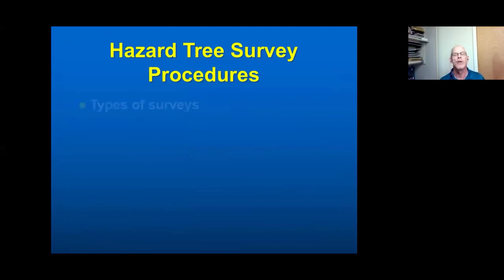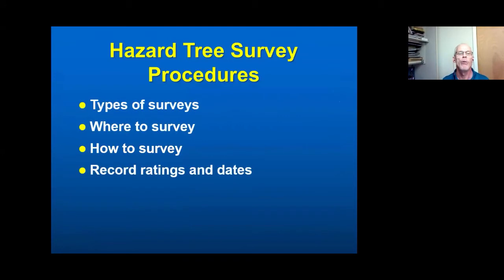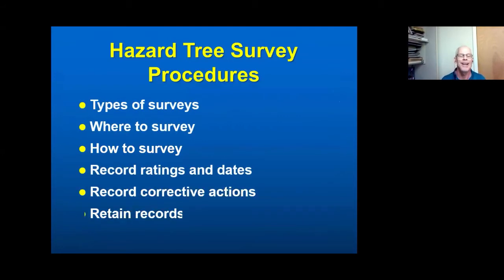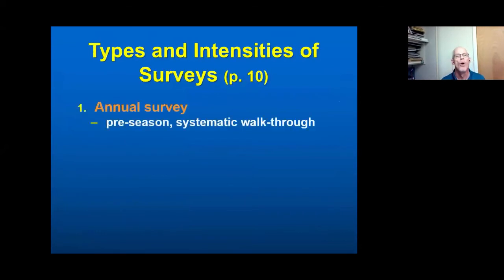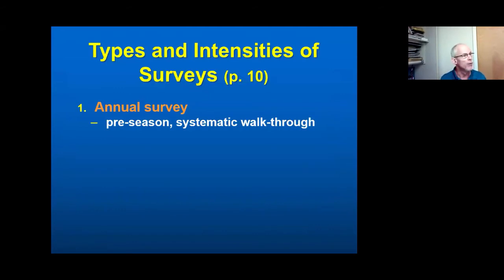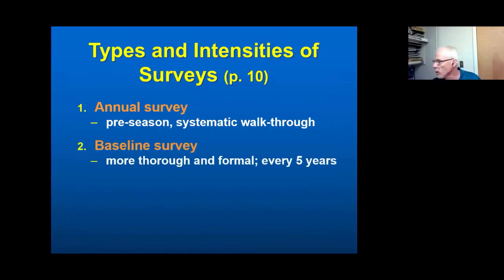Getting into hazard tree survey procedures. We'll talk about types of surveys, where to survey, how to survey, and recording ratings, diseases, corrective actions, and documentation. One common approach in a natural resource setting is a preseason systematic walkthrough prior to opening the site in spring — the Forest Service form for this process actually has an element for looking at hazard trees. It's basically a quick walkthrough to see if anything has changed or developed over the winter. Most of what I'll focus on today is conducting a more detailed baseline survey; we recommend doing these about every five years.